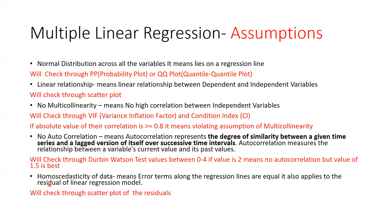If your value is near 1.5, that means there is no autocorrelation problem in your data. Next, we will talk about homoscedasticity of data, which means the error terms along the regression line are equal. It also applies to the residuals of the linear regression model, and we check this through a scatter plot of the residuals.